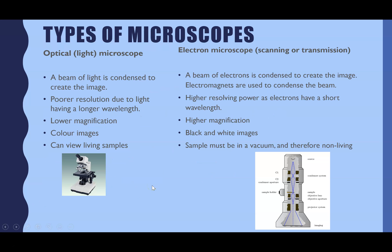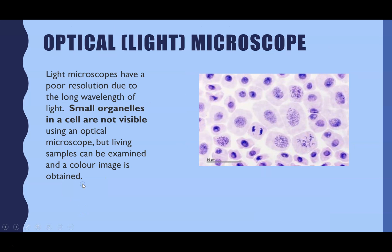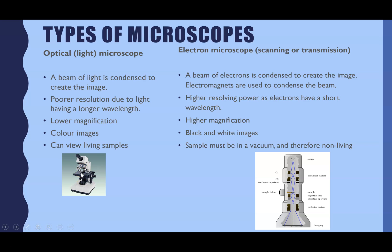The optical microscope is the type you're familiar with — what schools and colleges have access to. A beam of light from a lamp is condensed to create the image. Optical microscopes have a much lower resolution than electron microscopes because light has a longer wavelength, which determines resolution. They also have a lower magnification in comparison, but you can get colour images and use living samples.